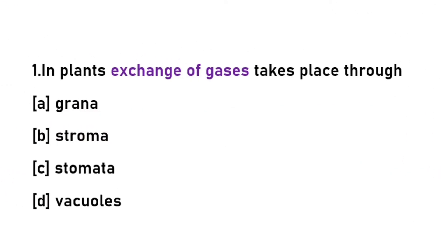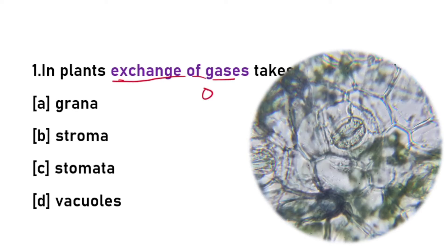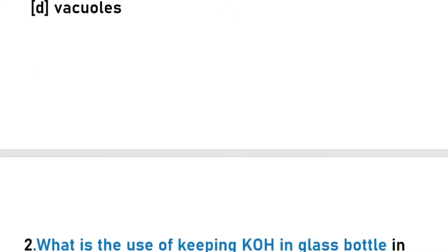Welcome to our channel. Today we are going to discuss the most important multiple choice questions and answers from the first lesson of 10th class, and the topic is Nutrition. First question: in plants, exchange of gases takes place through stomata. The gases exchanged are oxygen and carbon dioxide.